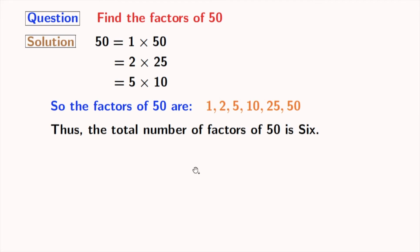So, the total number of factors of 50 is 6. Now, look at these factors. Among these numbers, 2 and 5 are the prime numbers.